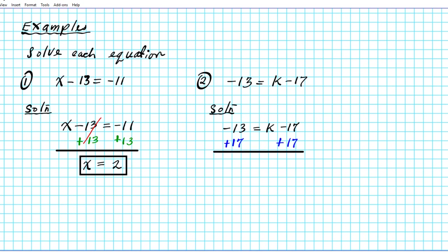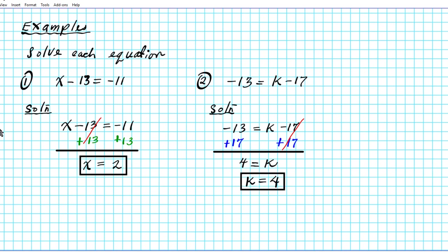On the right side, minus 17 plus 17 are inverses so they cancel out, leaving K. Then negative 13 plus 17: different signs, so subtract — 17 minus 13 is 4 — and keep the sign of the larger which is positive. So we rewrite this as K equals 4 using the reflexive property of equality.